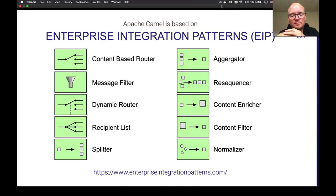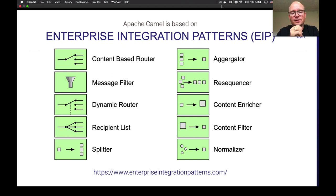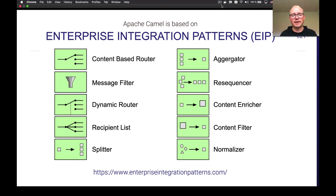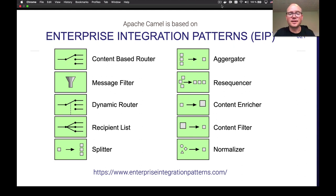Camel is based on something called Enterprise Integration Patterns, from a book published 15 years ago. The authors, Gregor Hohpe and Bobby Woolf, saw the same problems occurring over and over again when helping their clients with integration and messaging. So they wrote down about these problems, and that became a book. Now we have a common standard for integrations — routing messages based on content, filtering them, sending to a dynamic number of recipients, splitting, aggregating, and so on. Camel is an implementation of these patterns and many other things.